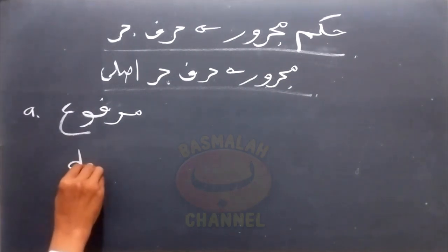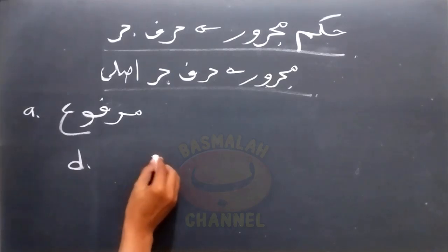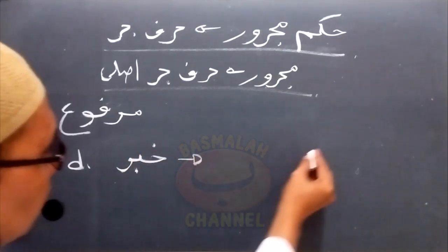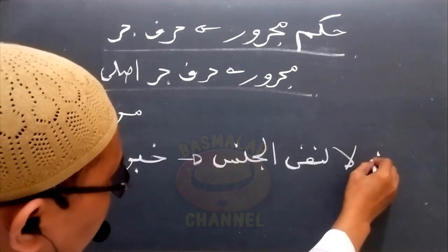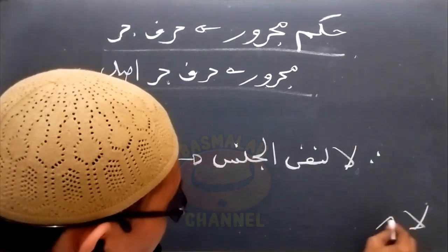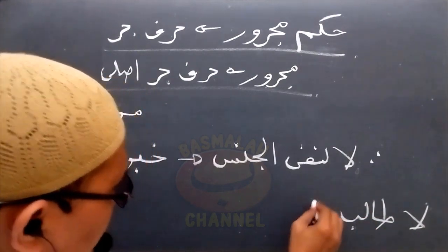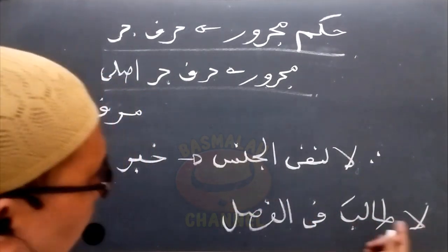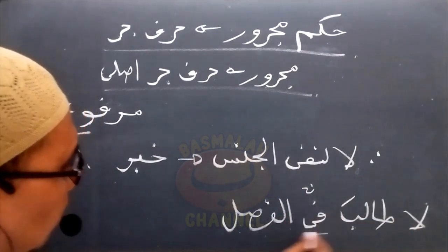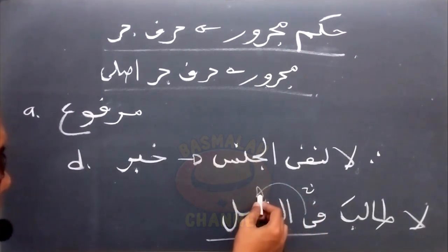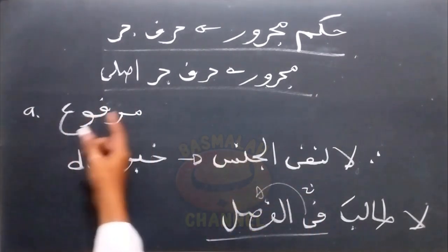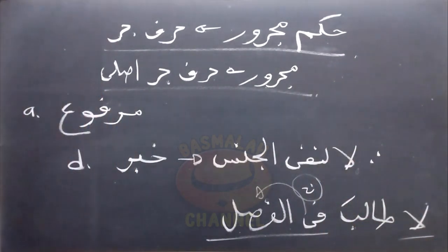Kemudian yang selanjutnya, dia marfu' karena juga berada di tempatnya Khabar daripada Inna wa akhwatuha. Contohnya seperti lafad 'Inna al-falaha fi al-amali as-salihi' — sesungguhnya petani itu ialah berada di dalam pekerjaan yang baik. Kita perhatikan lafad 'fi al-amali as-salihi', di sini terdapat huruf Jer Fi, susunan Jer Majrur ini dalam mahal rafa' karena berada di tempatnya khabar Inna dan saudara-saudaranya. Selanjutnya yang keempat, dia berada dalam mahal rafa' karena berada di tempatnya Khabar dari La Li Nafyi Al-Jinsi. Contohnya 'la taliba fil fasli' — tidak ada siswa berada di dalam kelas. Susunan Jer Majrur di sini dalam mahal rafa' karena berada di tempatnya Khabar daripada La Li Nafyi Al-Jinsi.